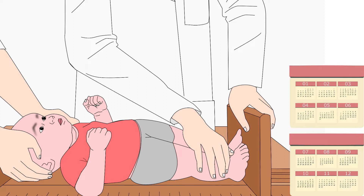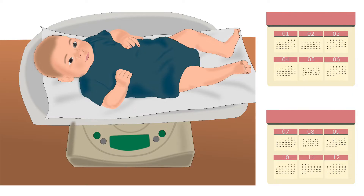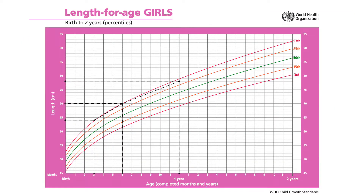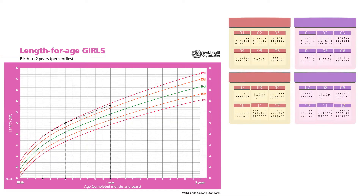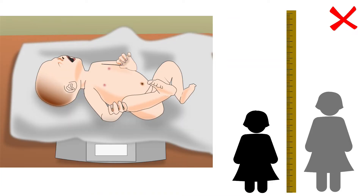Growth indicators take a child's age and measurements together into consideration. The first growth indicator is length for age, and the second one is weight for age. These indicators are plotted on growth charts over weeks, months, or years, which helps us to identify any growth problems.